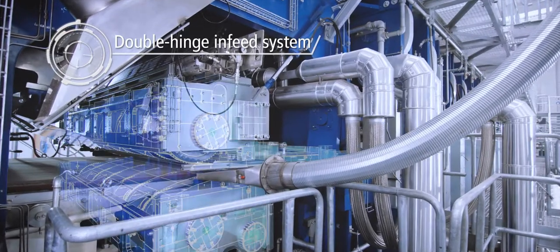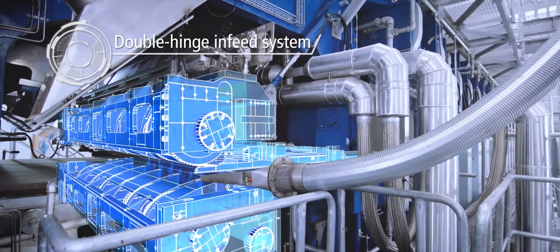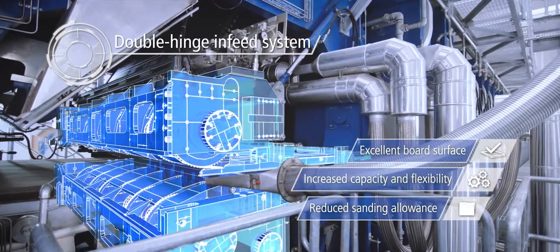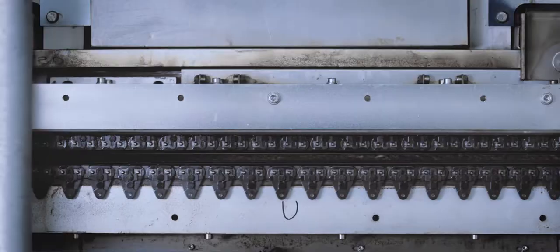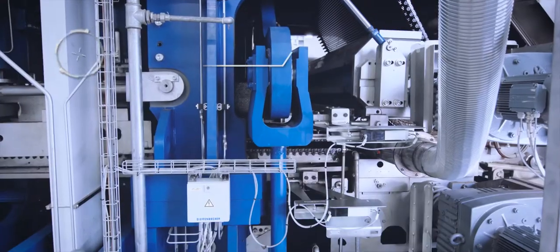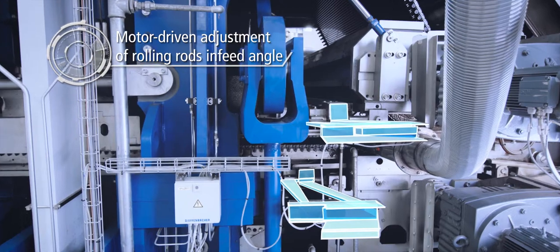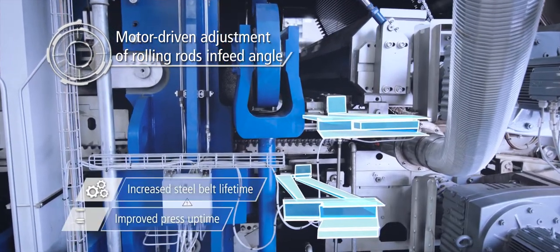The double-hinge infeed system enables rapid heat and pressure build-up. The motor-driven adjustment of the rolling rod's infeed angle improves steel belt tracking.